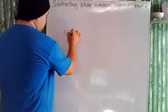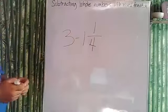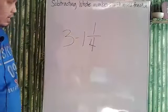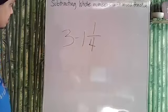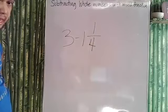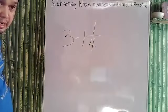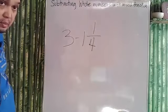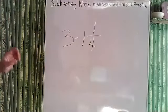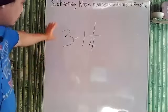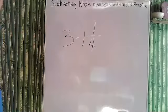Now, subtracting a whole number from a mixed number. We have a whole number and a mixed number, and we are subtracting a whole number with a fraction. To answer this, you must change the whole number into a mixed number first, so that both of them are the same structure and we can subtract them.